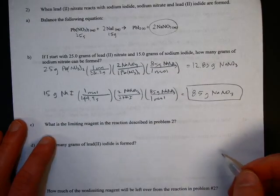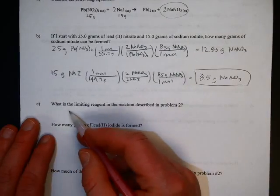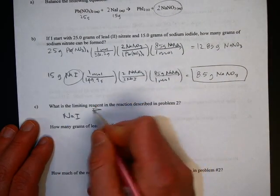So, this is how many grams are formed. The limiting reagent is the one that gives you the smaller of these two answers. So in part C, this is the limiting reagent. Sodium iodide is the limiting reactant.